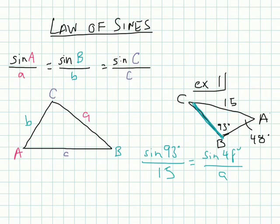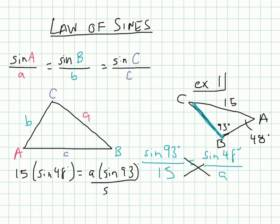I'm kind of running out of space here, but using cross-products property, we can write an equation that says 15 times the sine of 48 equals our missing side a times the sine of 93. We'll divide both sides by the sine of 93. And just for space here, this is 1, so let me erase this.